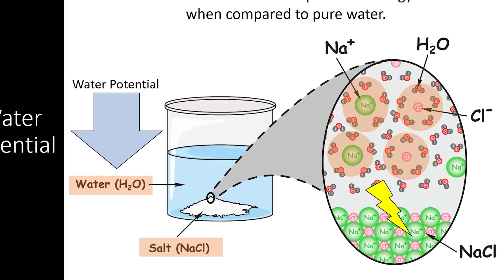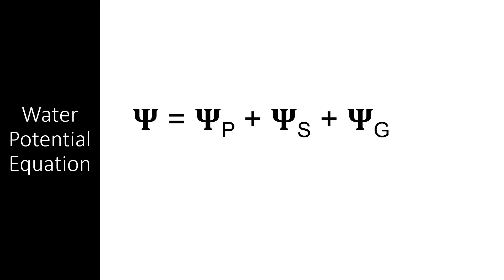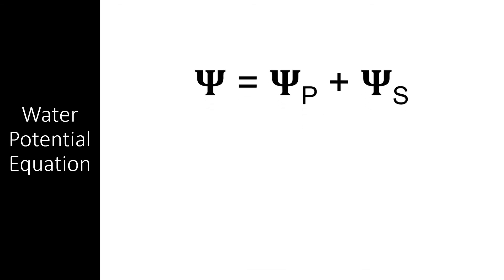There are many things that can affect water potential. Scientists use the letter psi (Ψ) from the Greek alphabet to denote water potential. The total water potential of a given solution is equal to all the individual aspects of water potential added together — we can add up the pressure potential, the solute potential, the gravity potential, the matrix potential, and many other aspects that contribute to the potential energy stored in a solution to get the overall water potential. In this course, we will focus only on two of these forces: the pressure potential and the solute potential.